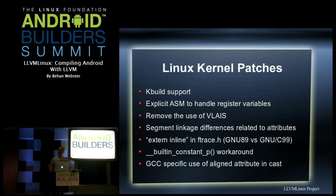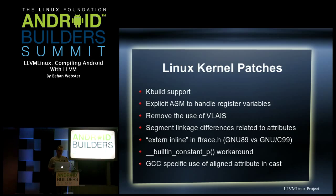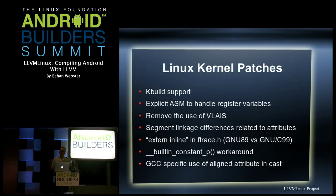We've removed use of variable-length arrays in structs, which are used heavily in the crypto subsystem, netfilter, and some USB gadget code. There are the segment linkage differences. There's also that 'extern inline' has changed meaning between GNU89 and GNU99 — GCC defaults to GNU89 behavior, so anywhere extern inline is used it has the opposite meaning in the new standard. We had to mark those explicitly with attributes to tell Clang to use the old meaning. We also patch out the use of __builtin_constant_p, and simplify some complex uses of the 'aligned' variable attribute that Clang couldn't parse.